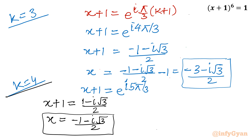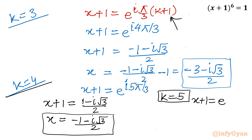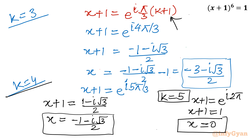For the last value k equal to 5: x plus 1 becomes e raised to i 2 pi, which equals 1. So x plus 1 equals 1, and taking away 1, x equals 0. You can match all 6 solutions found using complex numbers in method 2 with those found using algebraic identities in method 1. I hope this video will be meaningful to you. Do not forget to like, share, and subscribe. Bye bye till next video, friends. Good luck and take care.